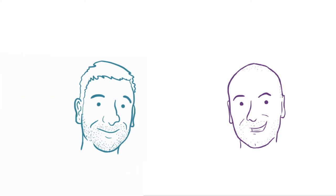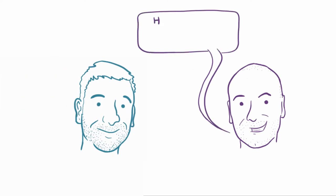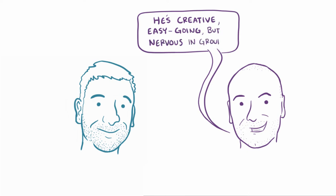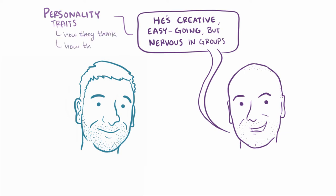If you were asked to describe a friend's personality, you might describe them as generally being a creative type, or easy-going, but nervous in groups. Basically, you're trying to summarize the personal traits that make them who they are, either how they think or how they act.